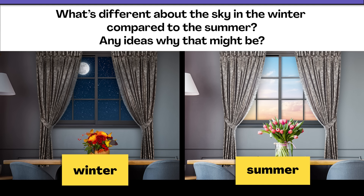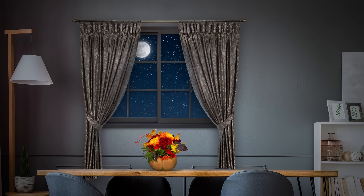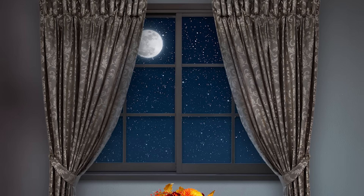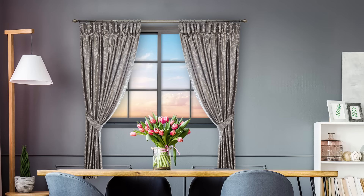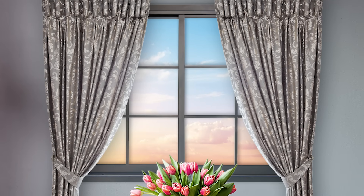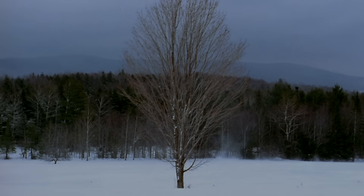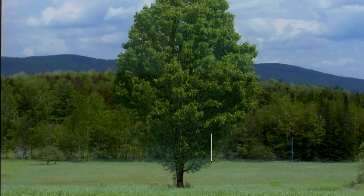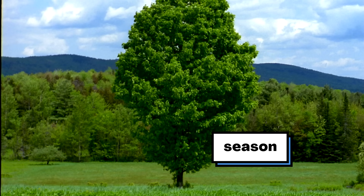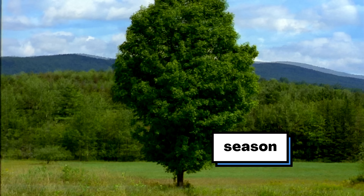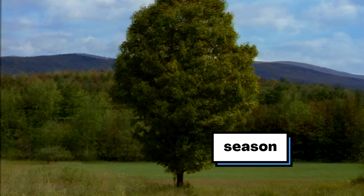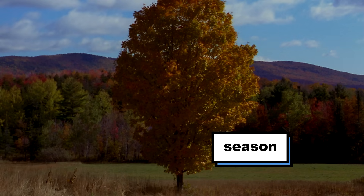Okay, are you ready? Maybe you noticed that it's darker outside in the winter. The sun has already set when I eat dinner. But in the summer, it's still light — the sun hasn't set yet. That's because in some places, the amount of daylight changes with the seasons. There's more daylight in the spring and summer, and less in the fall and winter. It's a pattern that repeats each year.